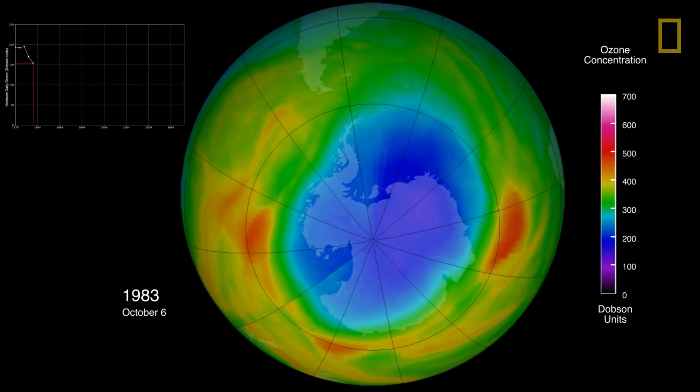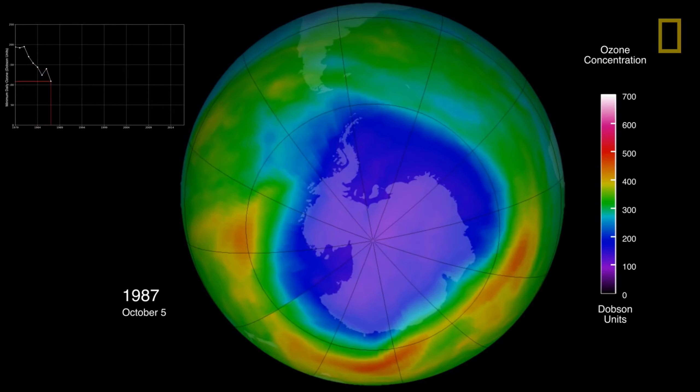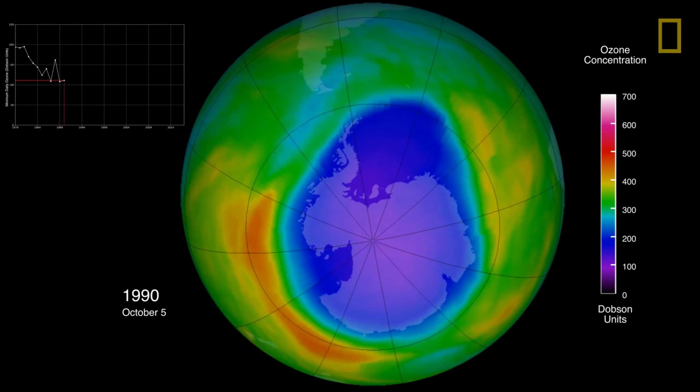Ozone holes are popular names for areas of damage to the ozone layer and these patches have been mainly found in the Antarctica area.